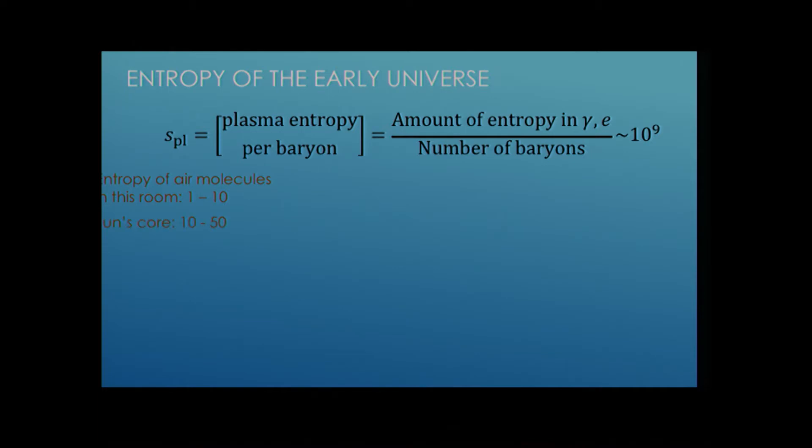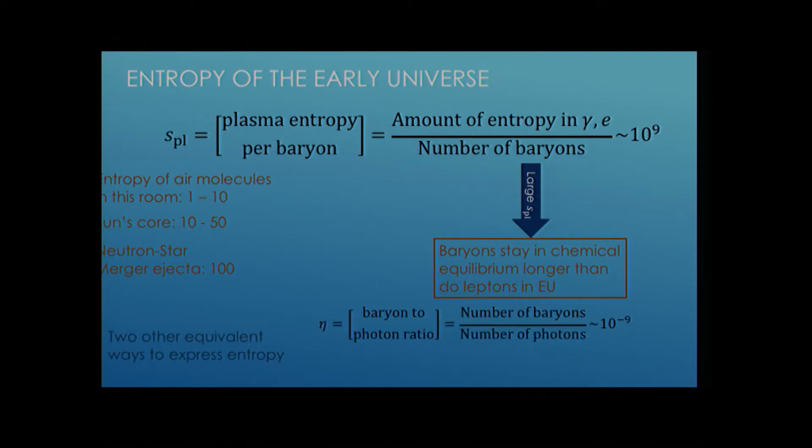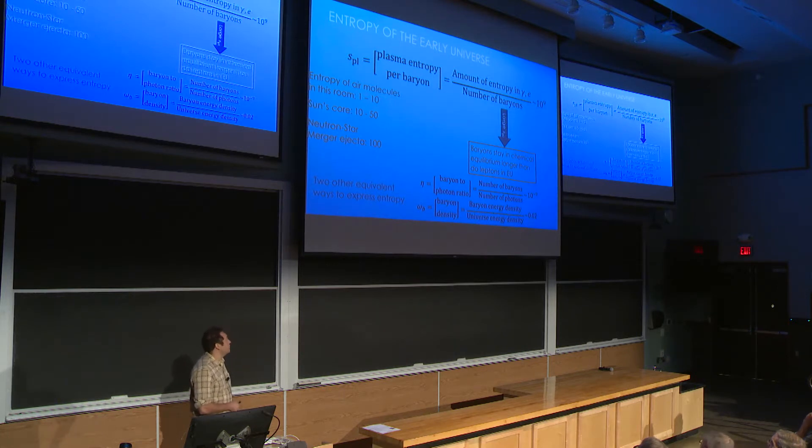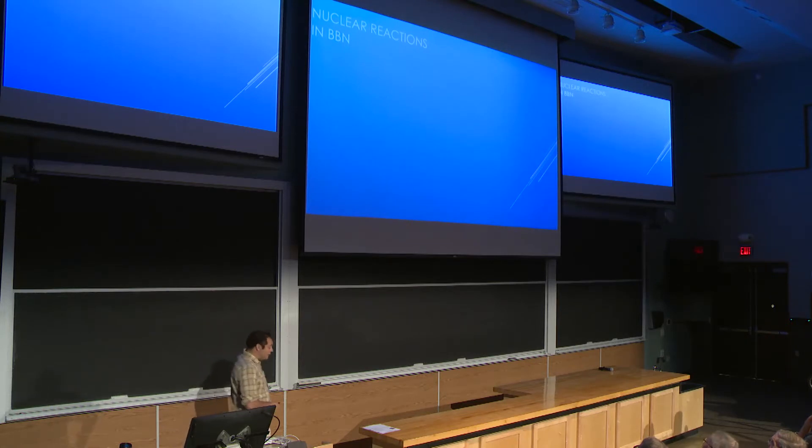Probably a lot of you think about entropy, you think of disorder. And so this is basically saying this quantity here, the plasma entropy per baryon, disorder in the photon, electron, positron sea, is divided by the number of baryons. This number is 10 to the 9. For some comparisons, I'm cheating a little bit here. But the entropy of the air molecules in this room is about order unity, maybe 10 or so. In the core of the sun, 10 to 50. In the ejecta from a neutron star merger, about 100. So 10 to the 9 is quite large.